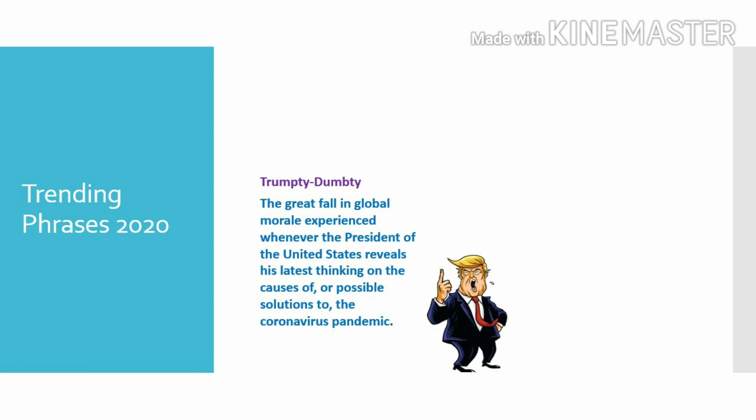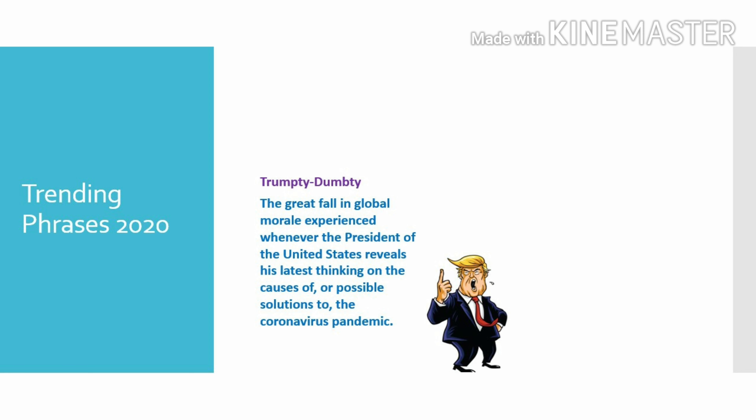Next — and it's not Humpty Dumpty: trampty dumpty — the great fall in global morale experienced whenever the president of the United States reveals his latest thinking on the causes of, or possible solutions to, the coronavirus pandemic. The last slang word: vapidemic — the outbreak of meaningless and badly thought-through opinionating that always occurs in response to any new coronavirus development, statistic, forecast, or presidential press conference.